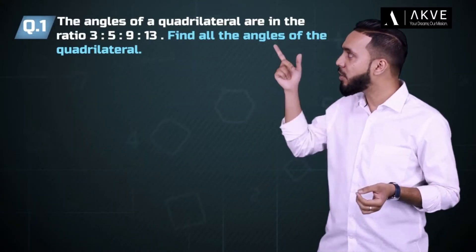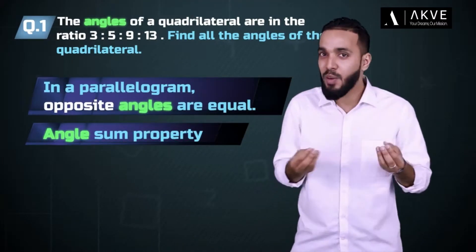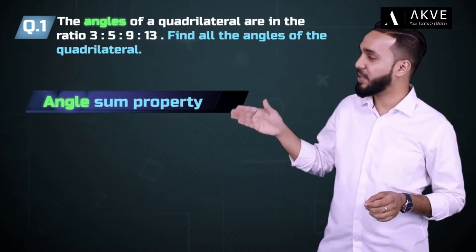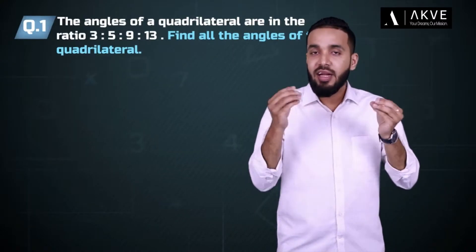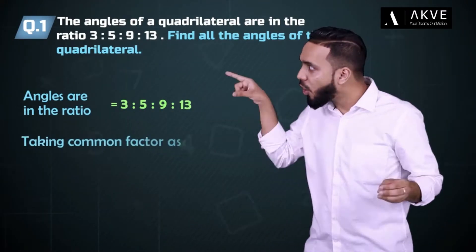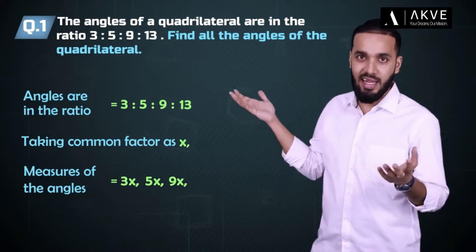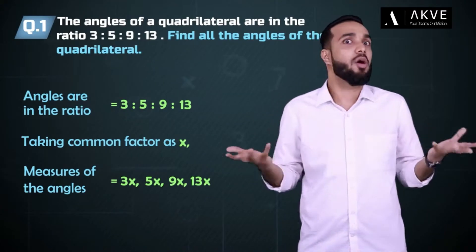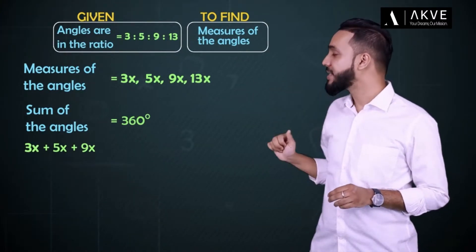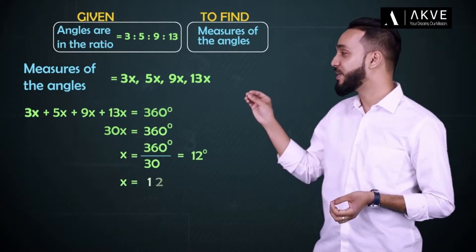Since the question talks only about angles, we know that the property which can solve this is either of these two. But there is no mention of opposite angles here, so we will be using the angle sum property. If we take the common factor in this ratio as x, then the different angles would just measure 3x, 5x, 9x, and 13x respectively. The angle sum property of a quadrilateral tells us that the sum of all angles is 360 degrees, so 3x + 5x + 9x + 13x = 360 degrees. Then 30x = 360 degrees, or x = 12 degrees.